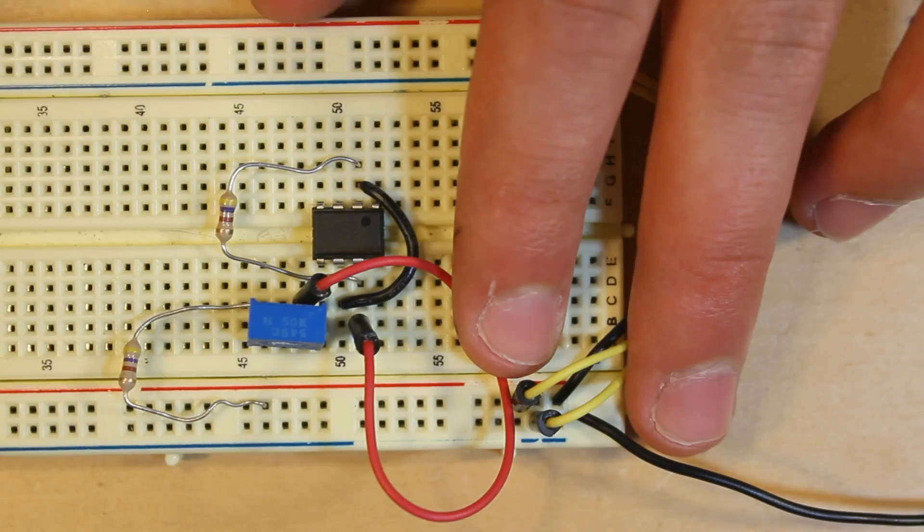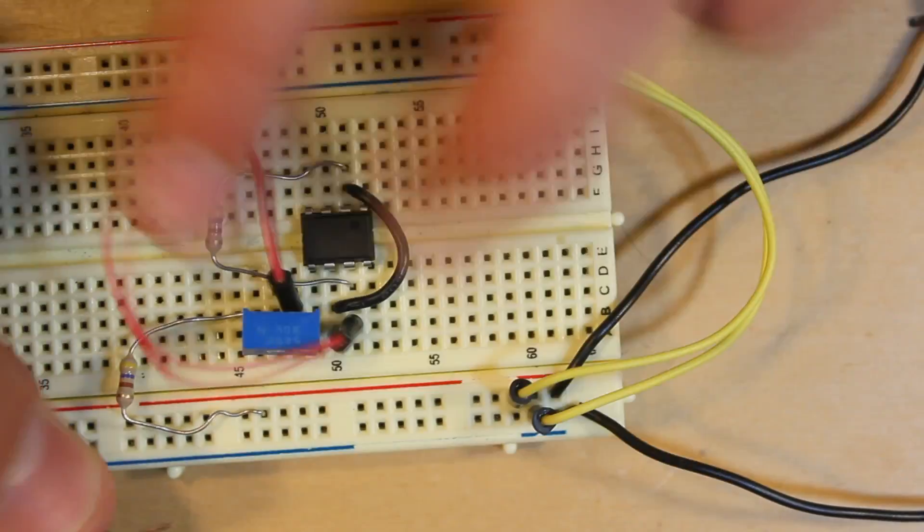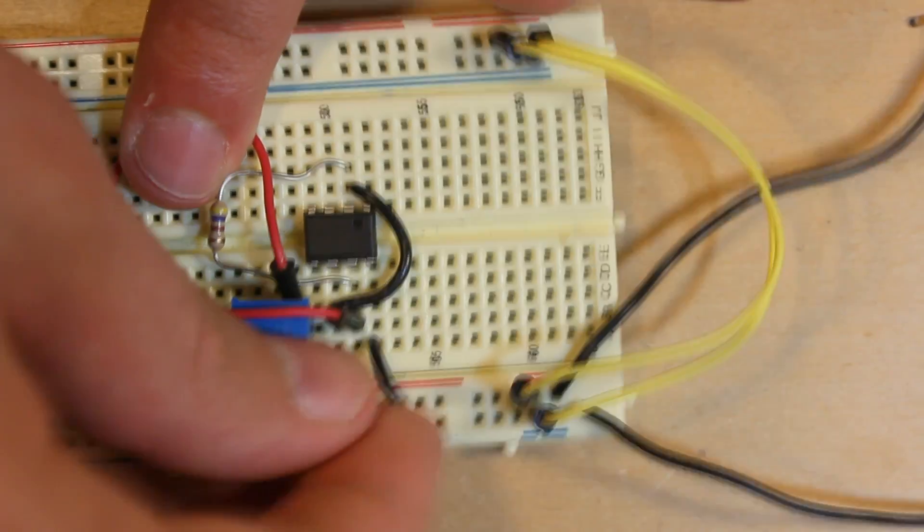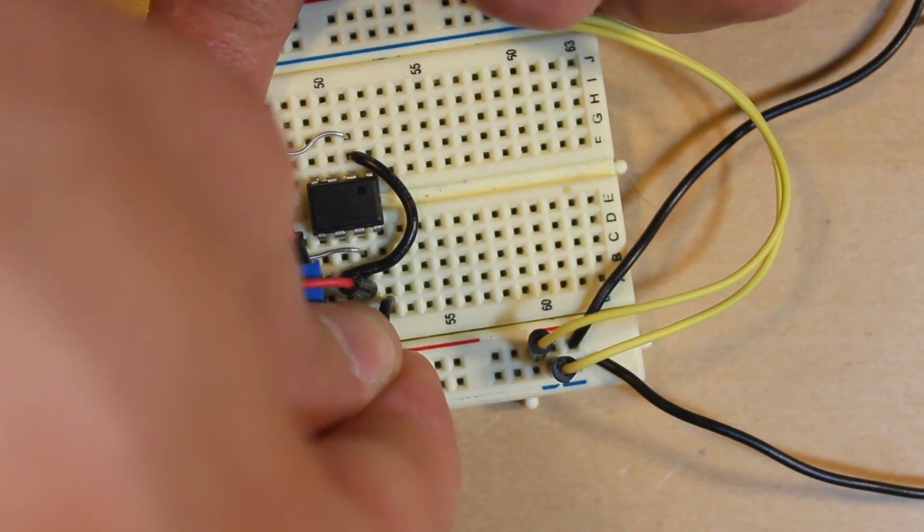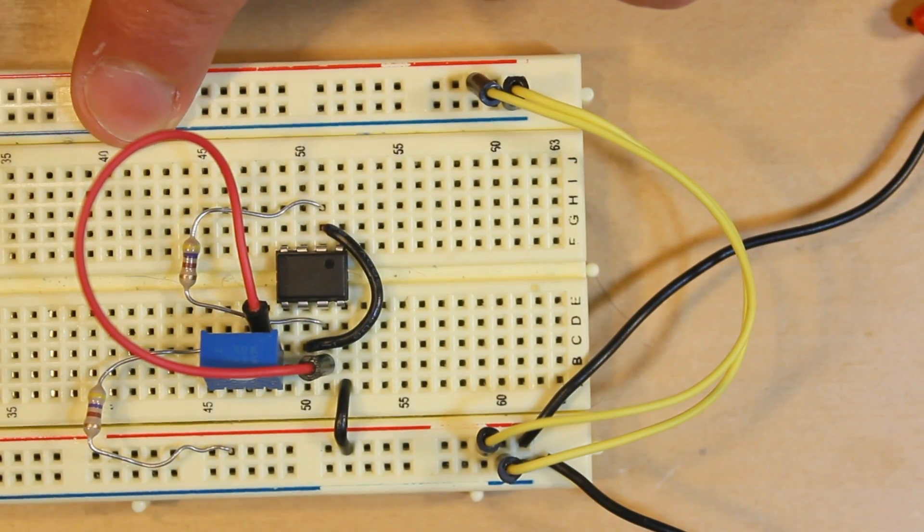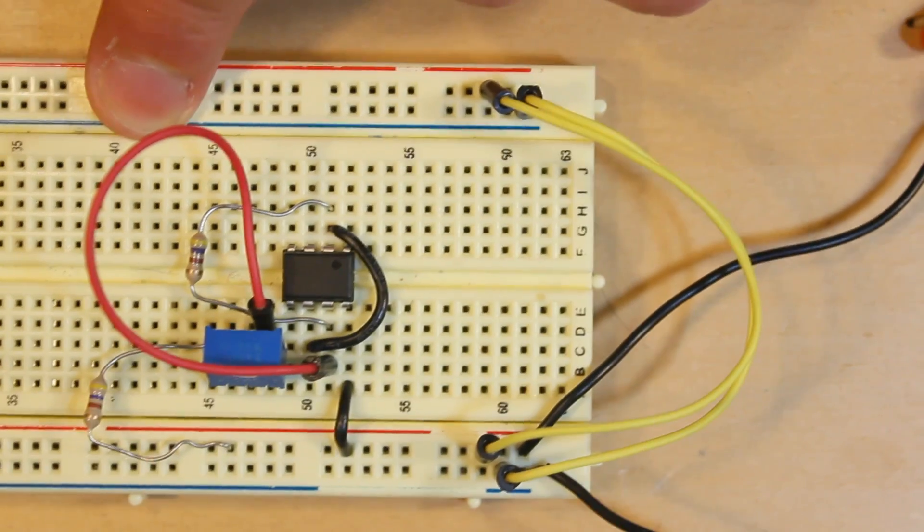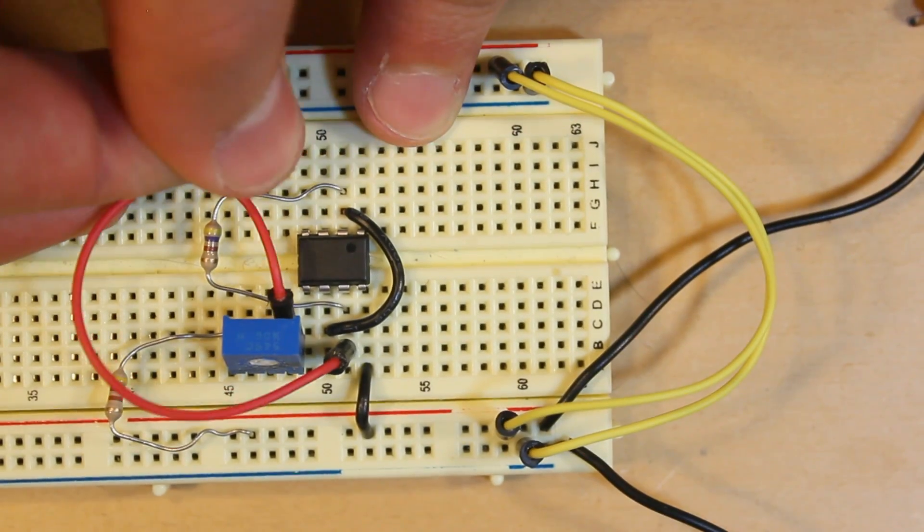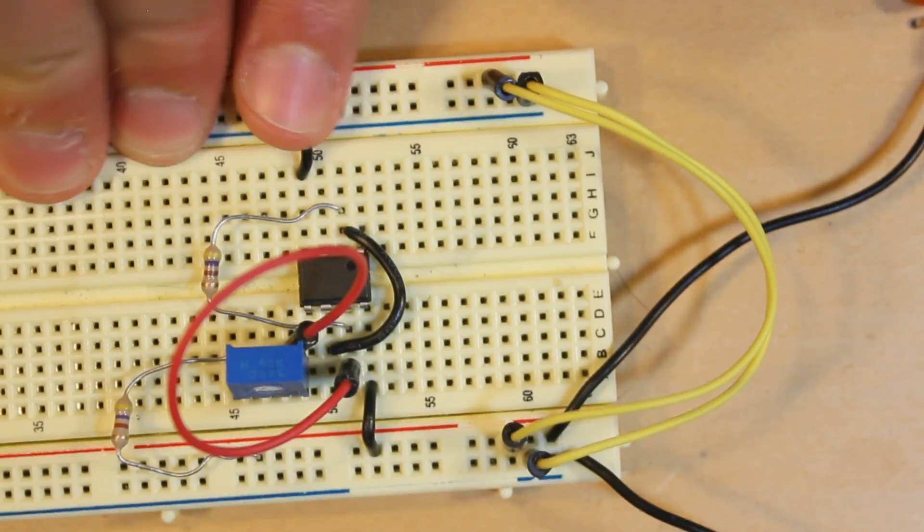Then what we're going to do is take another jumper and plug it into pin 8, and then into the positive right here, from pin 8 into the positive rail. Then we're going to take another jumper and connect it from pin 4 to the positive rail.